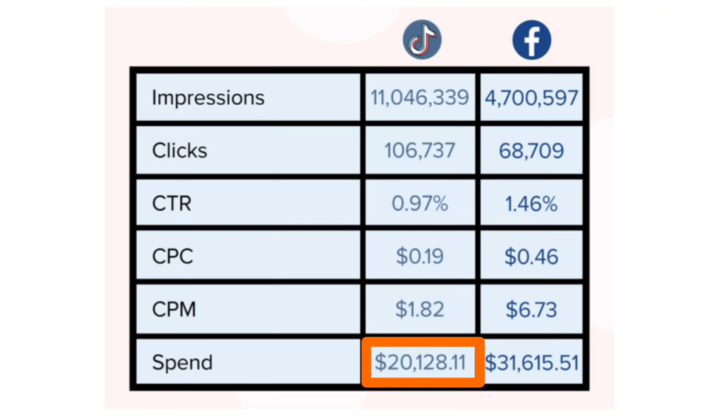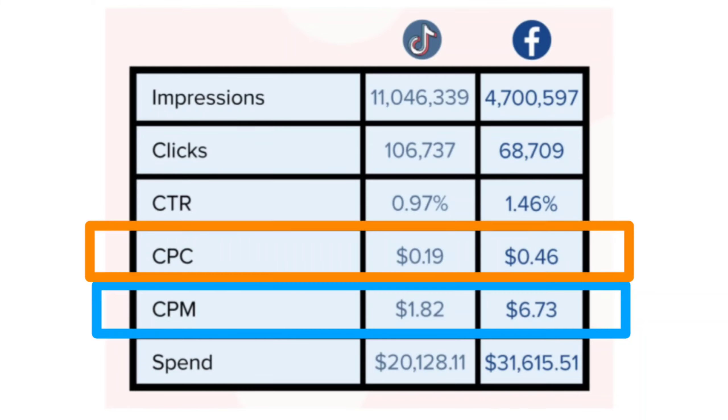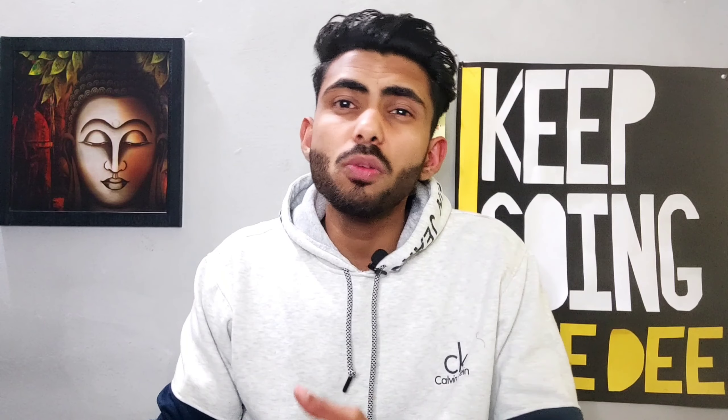Reason number two why TikTok ads are better for dropshipping than Facebook ads is that it is relatively cheaper and we can get far more impressions with less money. To prove that, here is the data: if we spend $20,000 on TikTok ads we will get more than 11 million impressions, whereas if we spend $31,000 on Facebook ads we will get only 4.7 million impressions, which is not even half of TikTok. If you look at the CPM and CPC, Facebook spends way more money than TikTok to get less results. The only thing better in Facebook ads is the CTR — the click-through rate — but there is not much use of a slightly better CTR if we cannot reach more people.